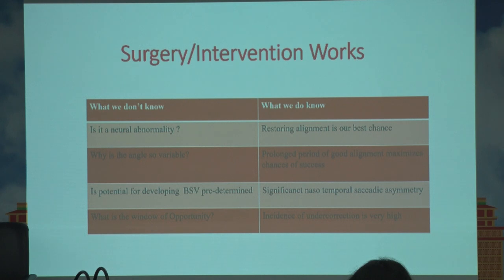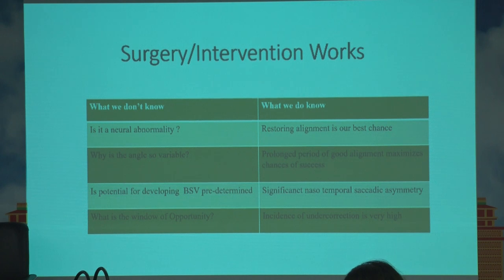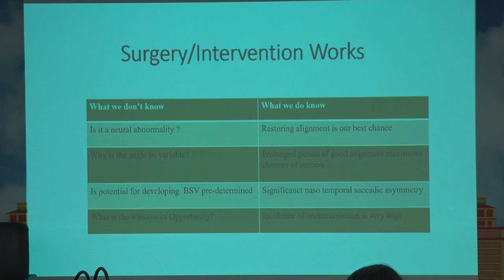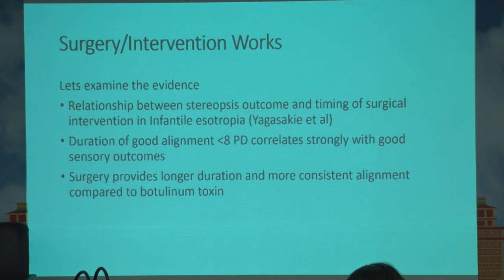Proponents of surgery argue against Botox, noting that the neural anomaly is not fully understood, the angle of deviation is variable, whether the potential for binocularity is predetermined is unknown, and the window of opportunity may be wasted with repeated Botox injections. Surgery provides full correction beyond what Botox can achieve for deviations greater than 40 prism diopters, a prolonged sustained period of good alignment, better final clarity, and a lower incidence of undercorrection.